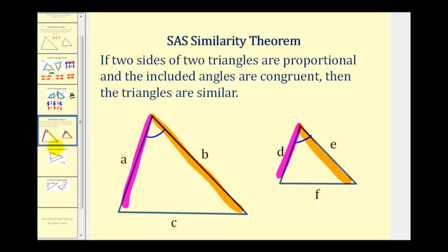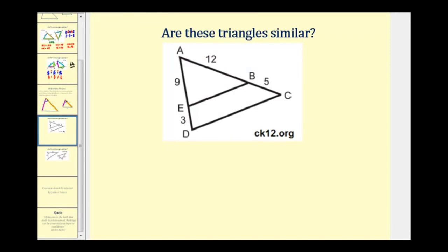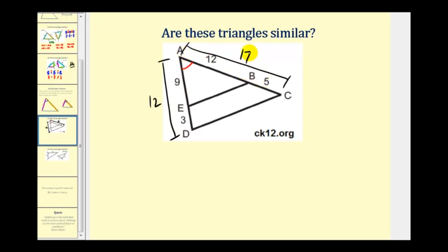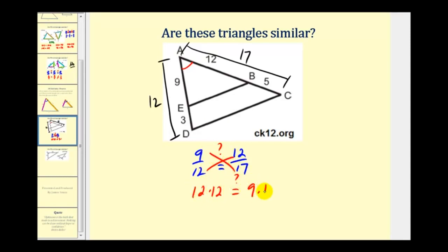We want to determine if these two triangles are similar. We know angle A is congruent to itself. The full length of one side is nine plus three, or twelve, and the other is twelve plus five, or seventeen. We check if nine to twelve equals twelve to seventeen by cross-multiplying: twelve times twelve equals one hundred forty-four, and nine times seventeen equals one hundred fifty-three. These are not equal, so this is not a proportion, and therefore these triangles are not similar.